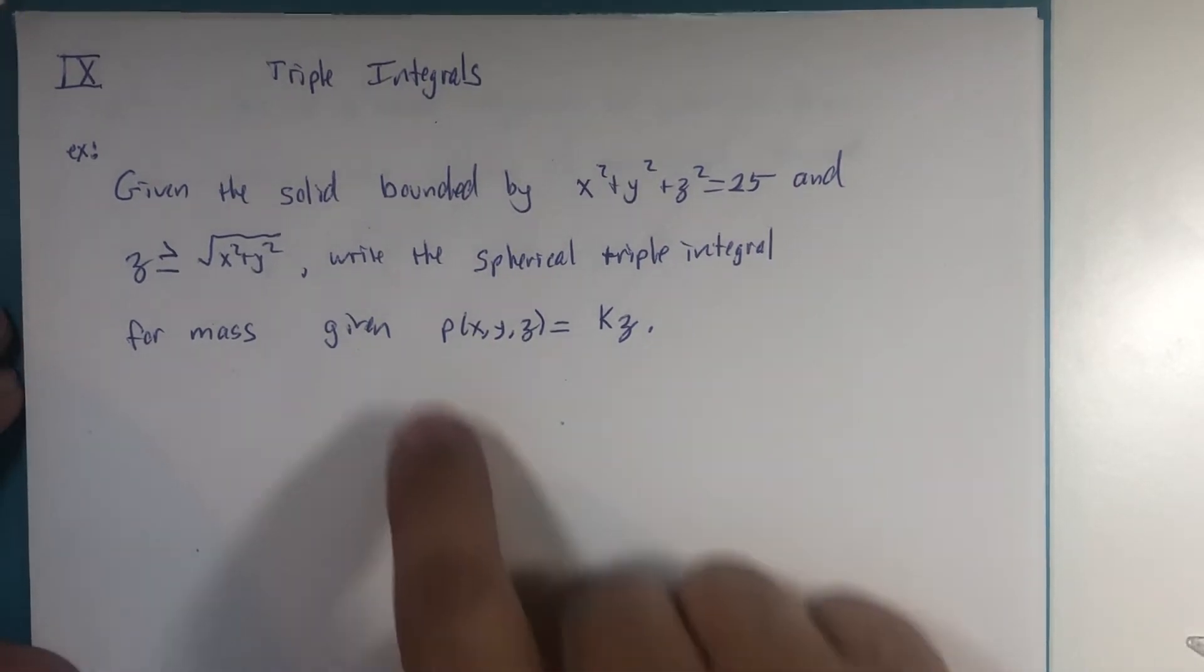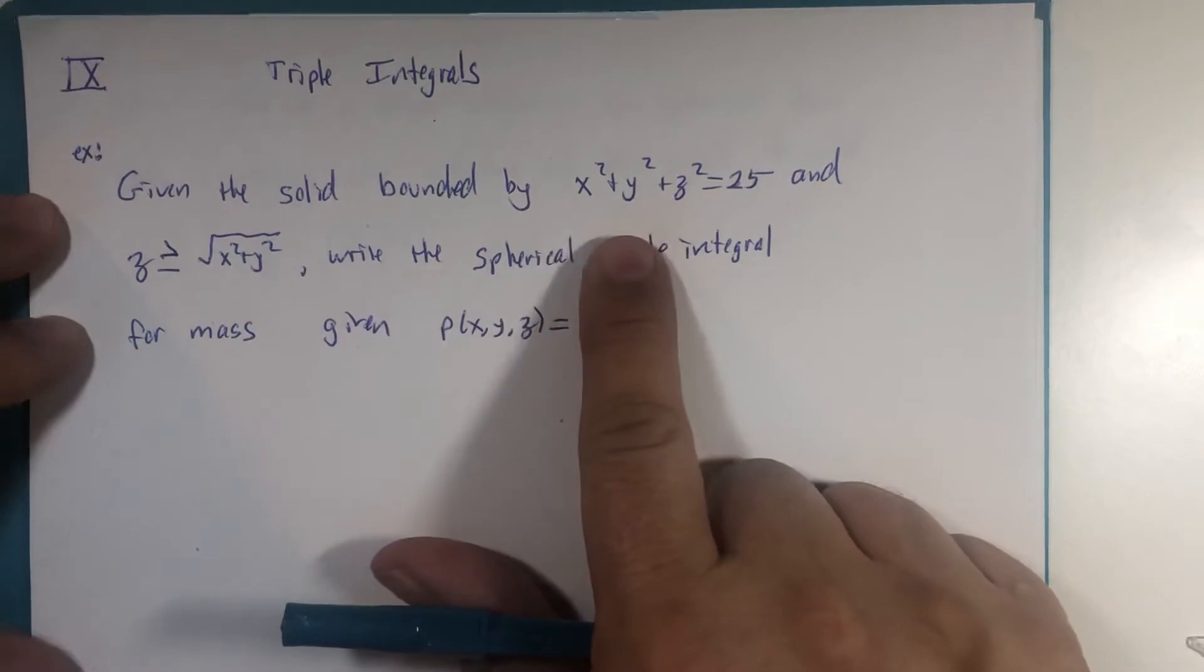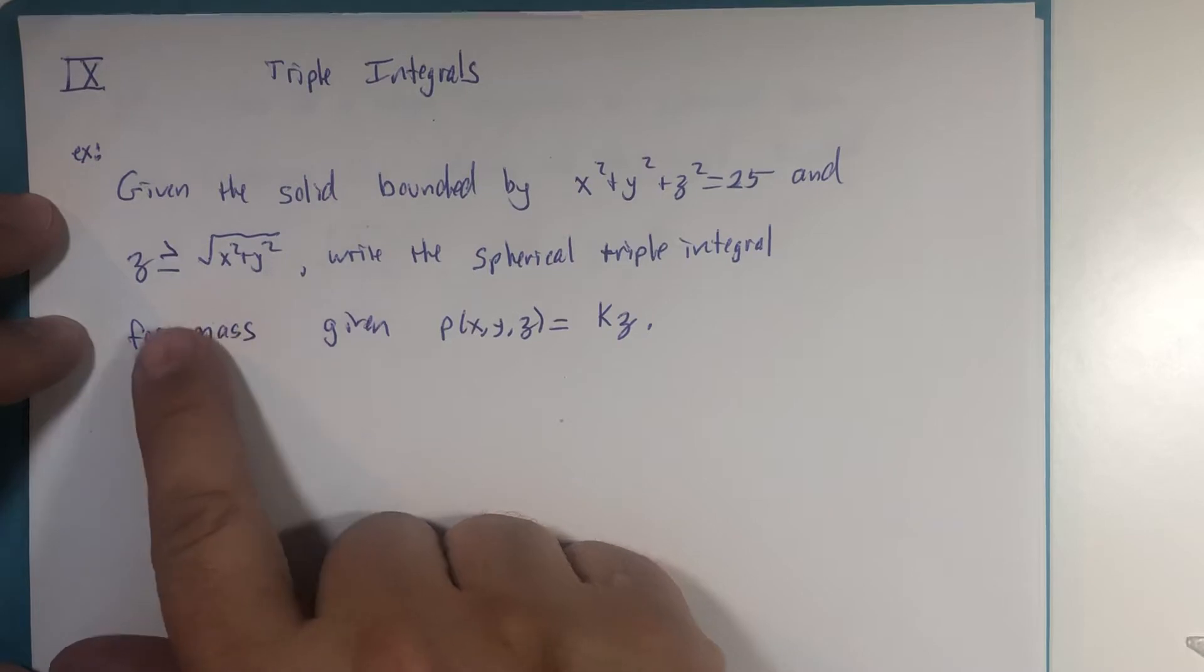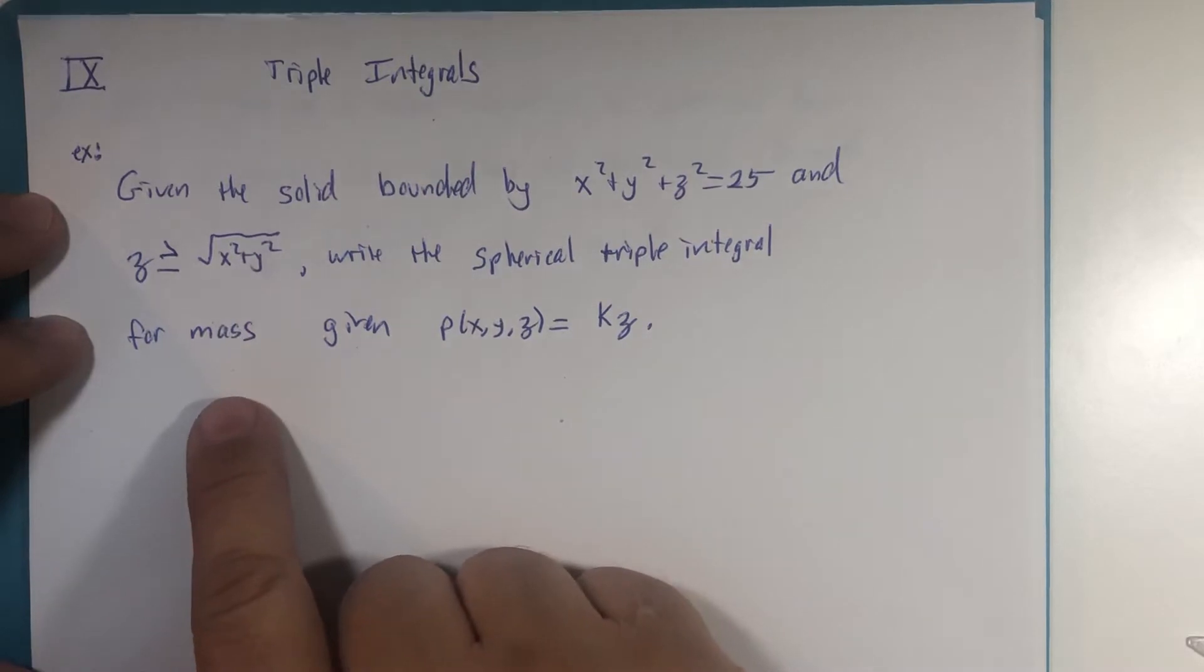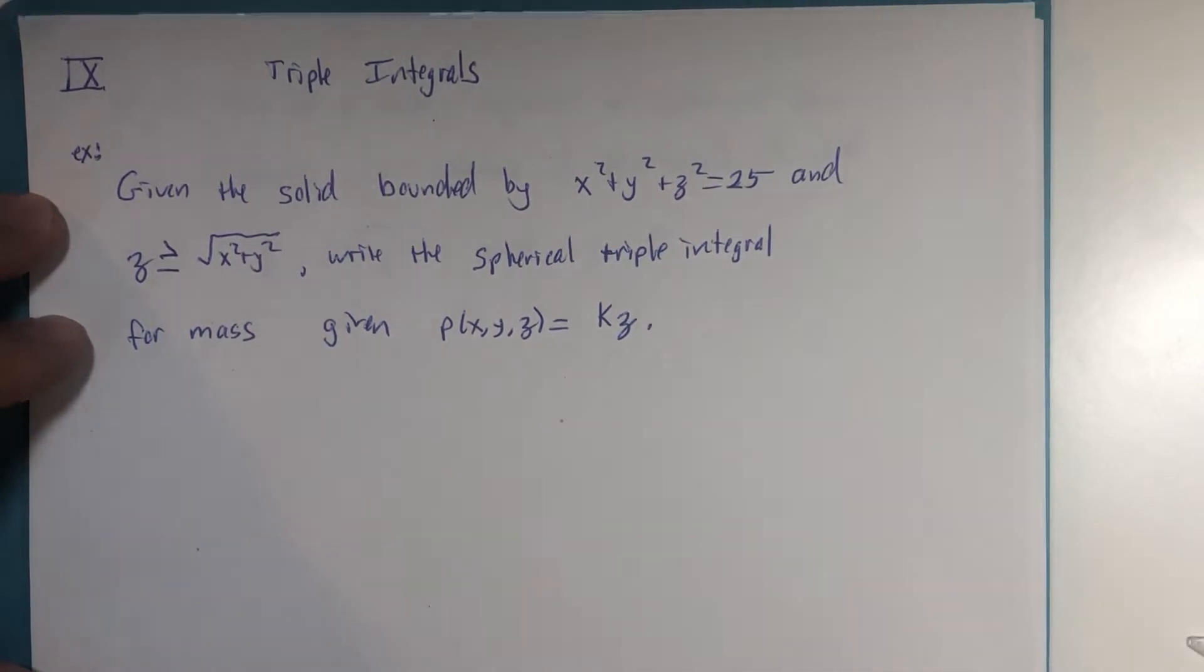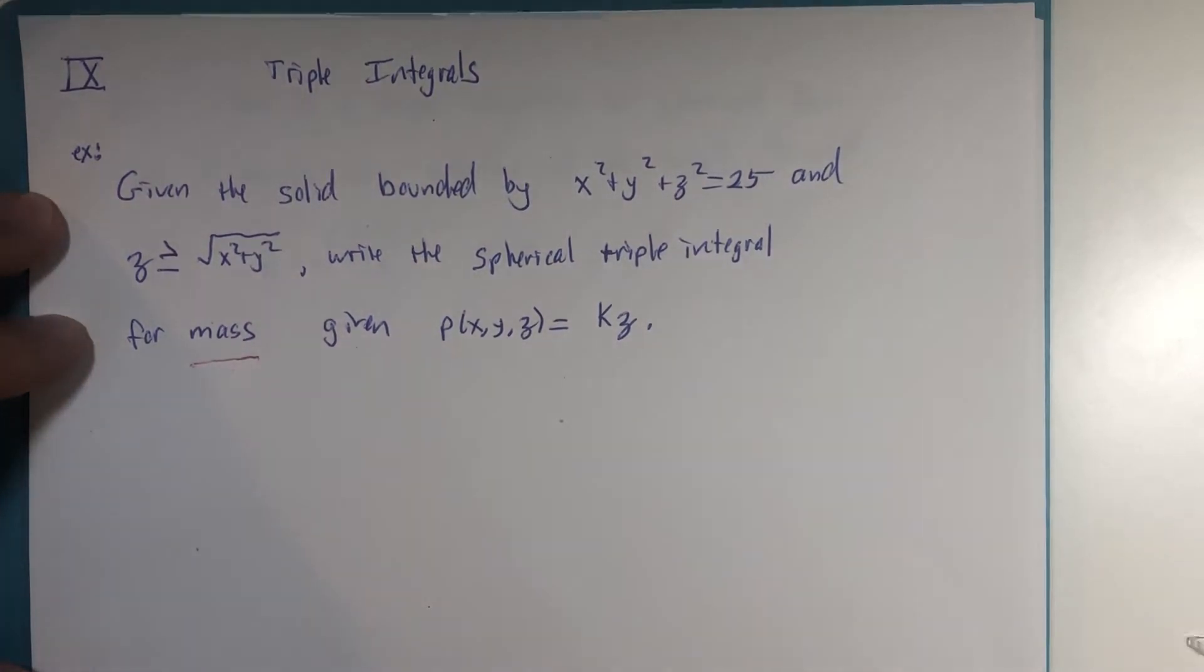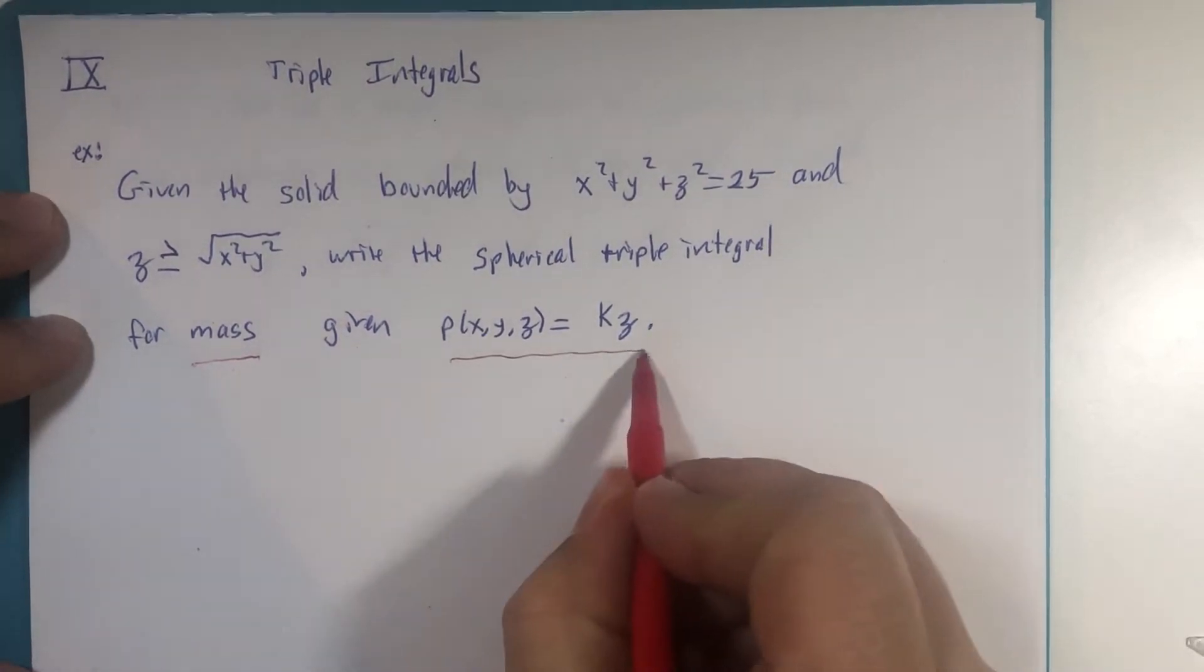So we have a solid bounded by a sphere, radius 5, and the region of that sphere that is above, that's right, this is a cone, above the cone. And just to make it a little bit interesting, we're going to calculate the mass, not the volume, and this is our density function.